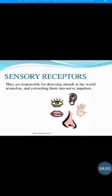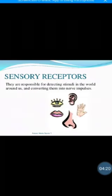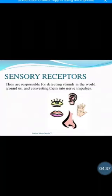What are the receptors? The receptors are the organs. They are responsible for detecting the stimuli in the world around us and converting them into a nerve impulse. For example, when a stimulus occurs, your sense organ receives the stimulus. The first step is stimulus, the second step is receptor.